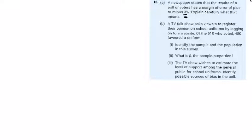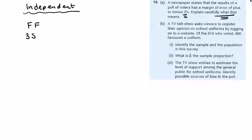The newspaper states that the results of a poll of voters has a margin of error of plus or minus three percent. Explain carefully what this means. Let's imagine this newspaper is the Independent and they do a survey and they find that Fianna Fail, a political party named FF, receive 35% of the public support.